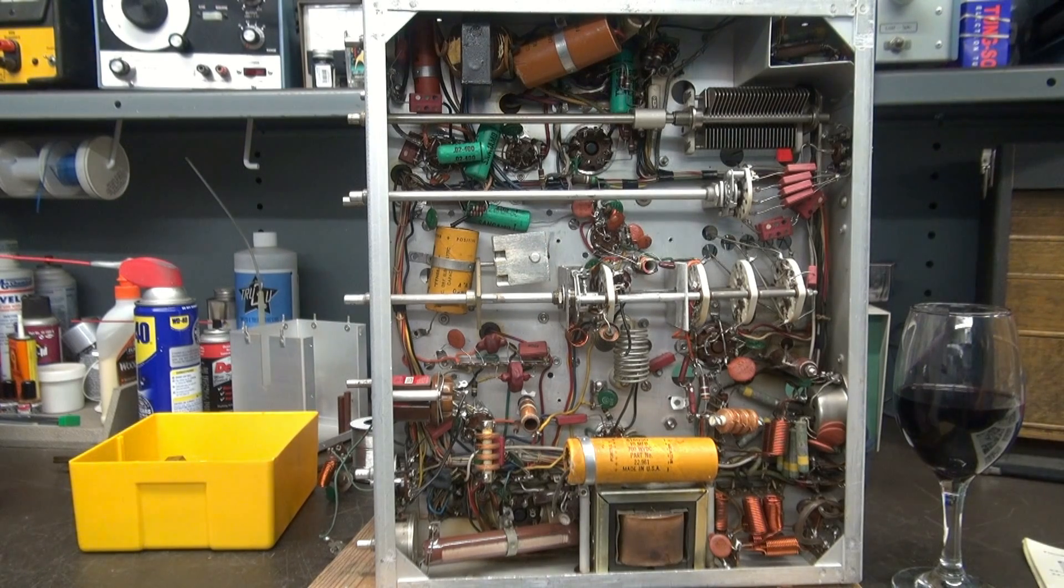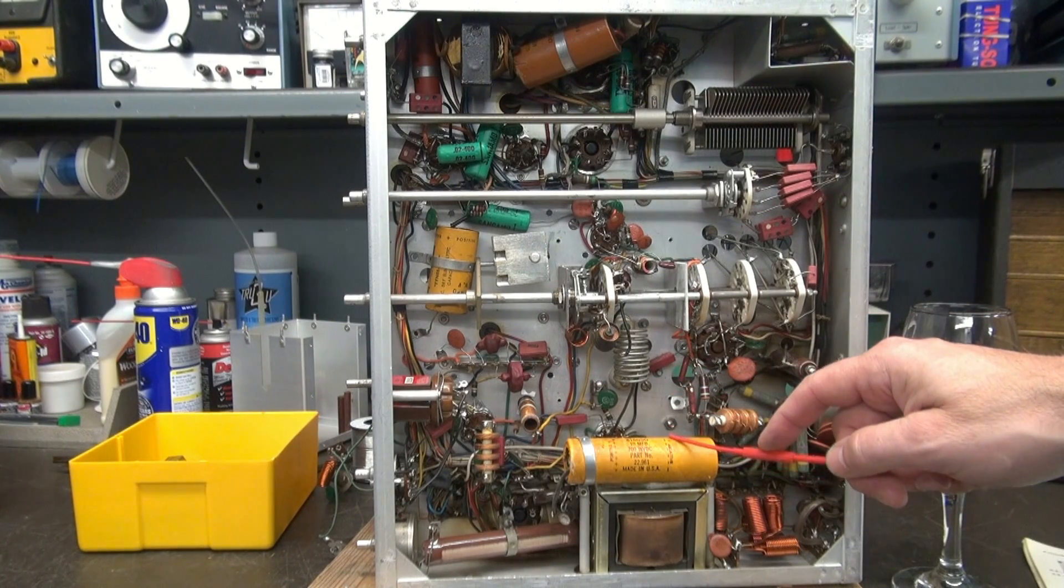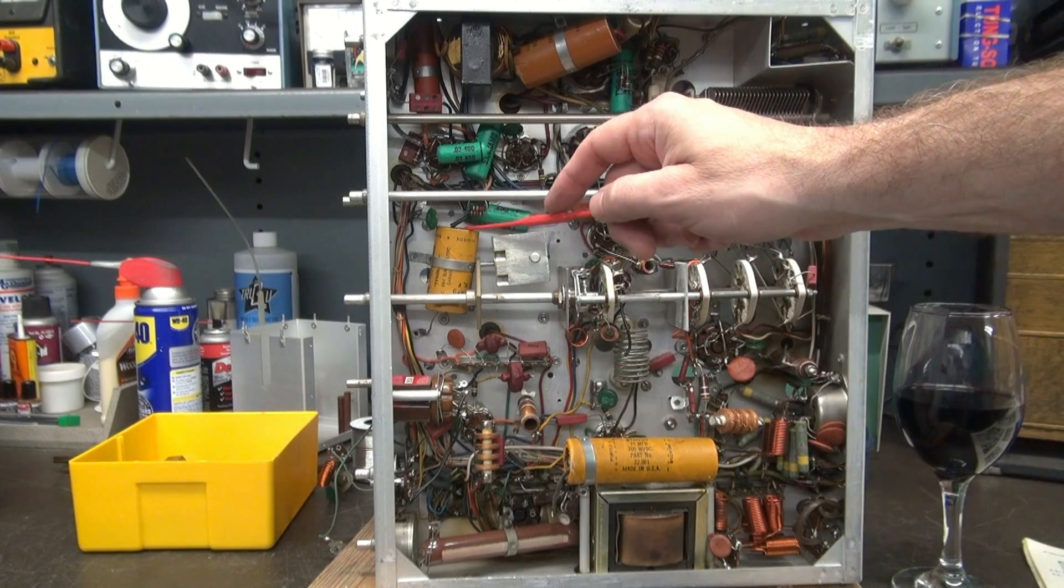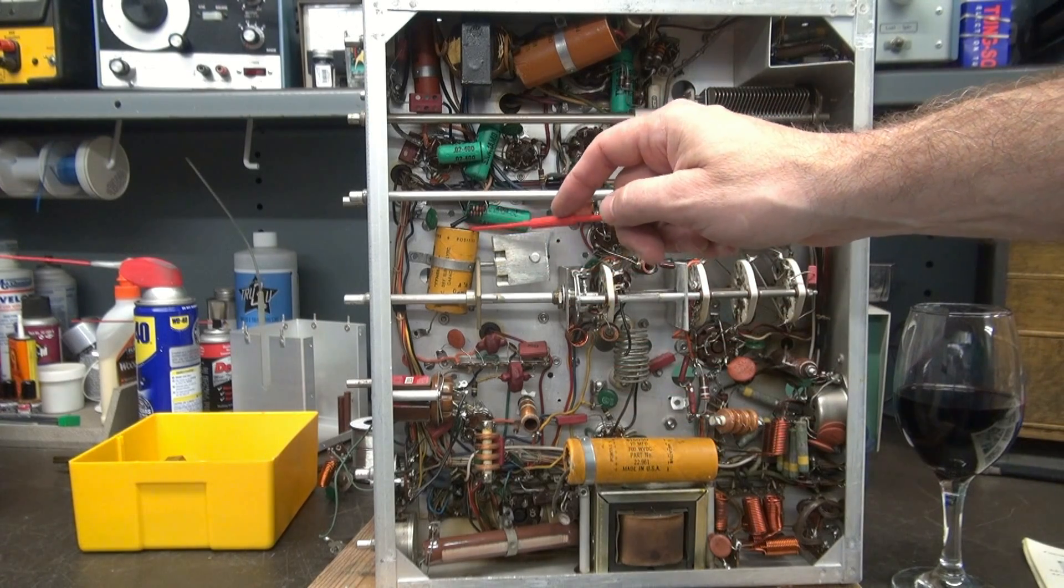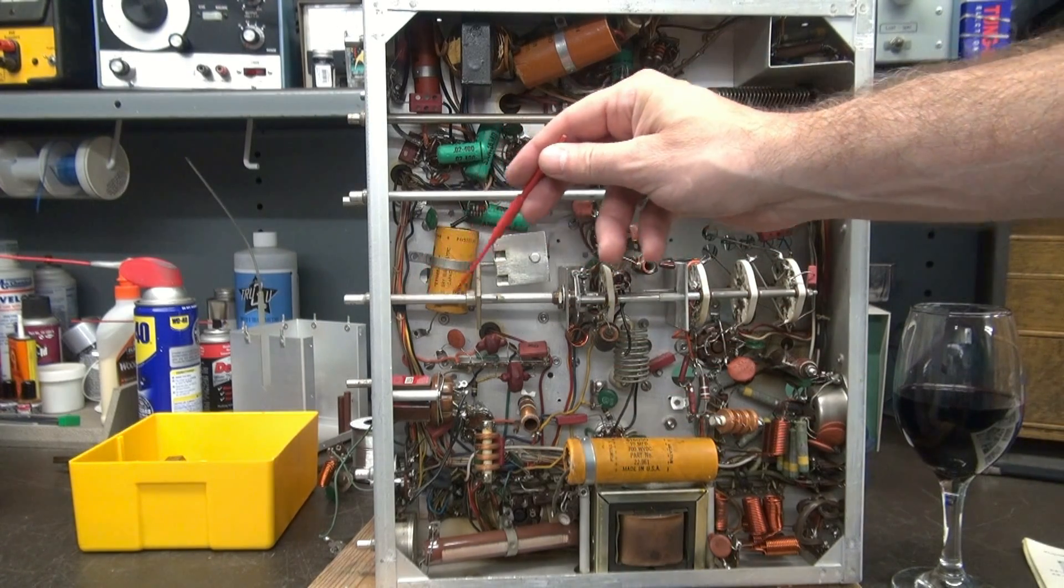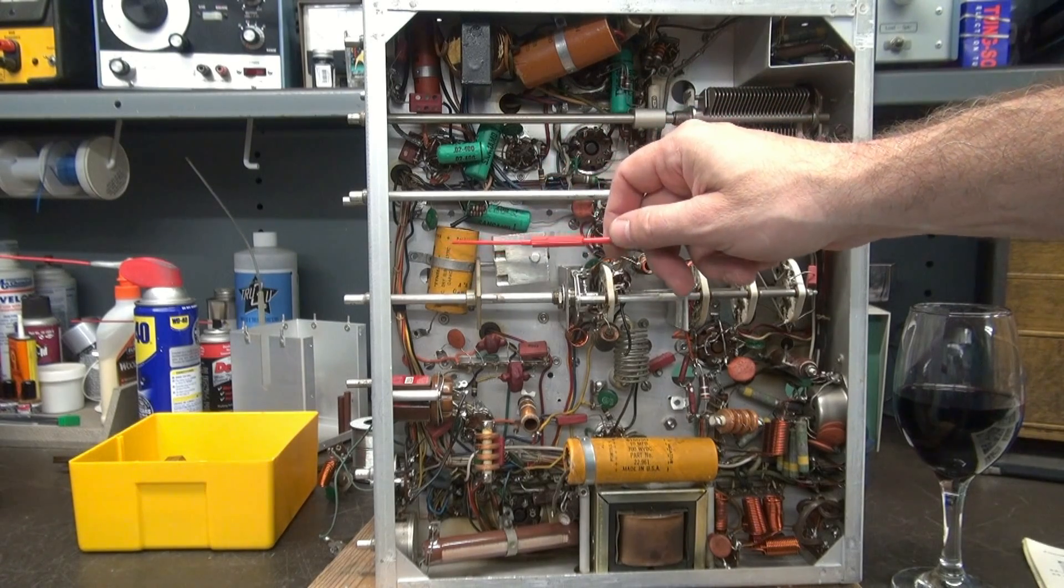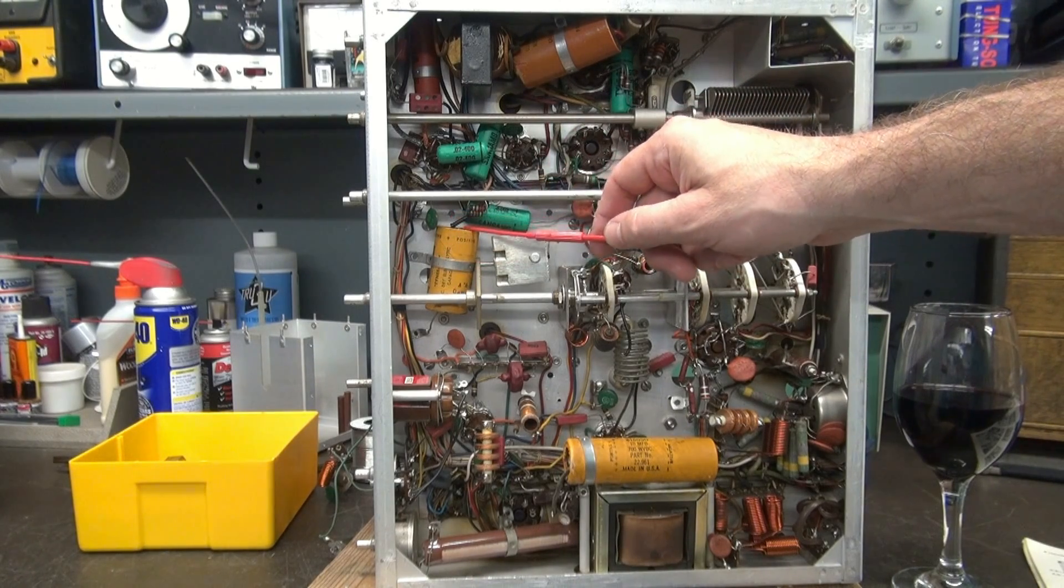So here are our bottom side. We've got our high voltage cap here, which is a 10 microfarad at 700 volts. Got this guy right here, which is always a real pain because it's right underneath the band switch. I thought that was always a bad idea. Anyway, I think this is like a 30 microfarad.